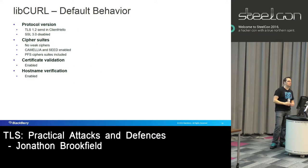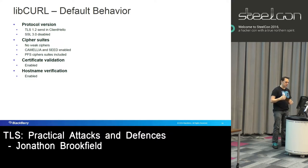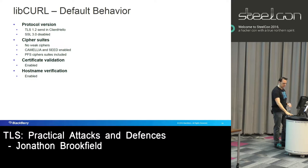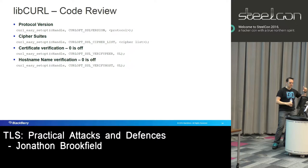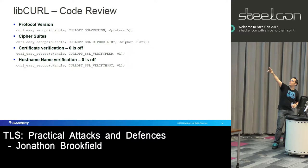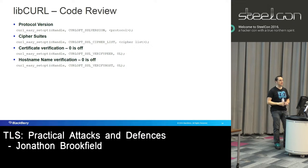In terms of libcurl, it's better than raw OpenSSL. Protocol versions are good, cipher suites are generally pretty good, and certificate validation and hostname validation are enabled by default. The things to look for are calls to curl_easy_setopt with SSL_VERIFYPEER or SSL_VERIFYHOST set to zero — that's the client disabling certificate verification and hostname verification.